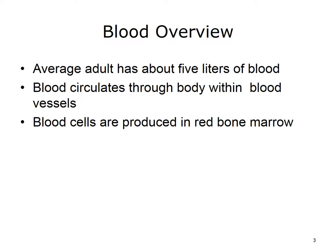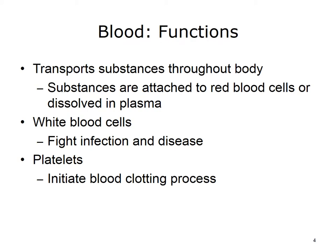Let's begin by taking a look at our blood and how it is produced. The average adult has about 5 liters of blood that circulates throughout the body within the blood vessels. Blood cells are produced in red bone marrow. In addition to blood cells and blood cell fragments, our blood also contains water and other substances such as proteins and platelets. Our blood serves to transport substances throughout the body, which attach themselves to red blood cells or are dissolved in the blood plasma.